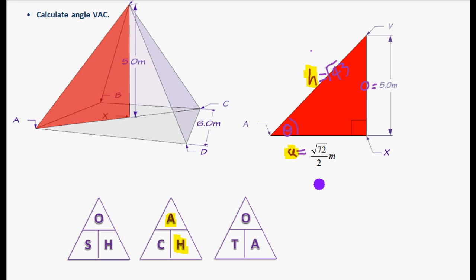So let's write it out. Cos of our angle equals adjacent over the hypotenuse. And the adjacent is root 72 over 2. And we're going to divide all of that by the square root of 43.